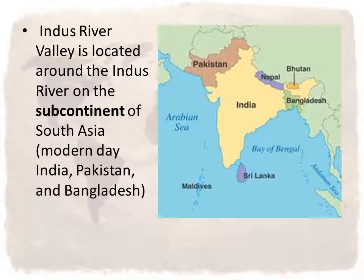The first area we're looking at is called the Indus River Valley. It's the region around the Indus River, and this river is located in South Asia on a part of the continent called the subcontinent. 'Sub' kind of means below or beneath, so it's the bottom part of Asia, and it's where modern-day India, Pakistan, and Bangladesh are.